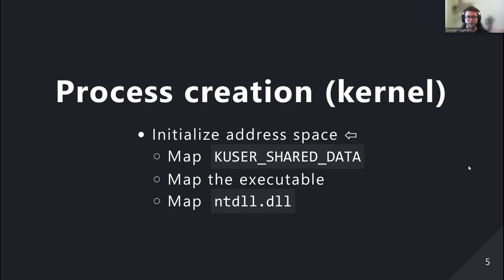We'll start with an overview of process creation from the kernel side. The first thing that happens is the address space of the process has to be initialized. Unlike Linux, on Windows when you create a process it creates a new process — it doesn't fork from an existing one. One of the first things it does is map KUserSharedData, a page shared across all processes where the kernel can write things like current system time, clock frequency, and the Windows folder path.